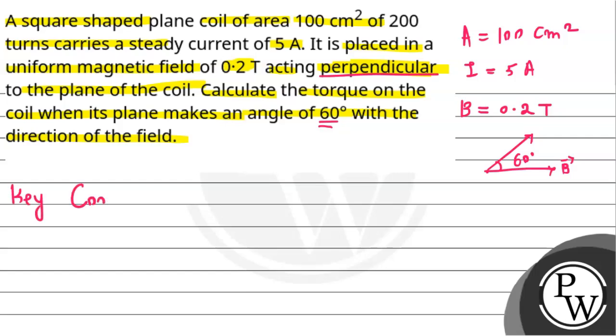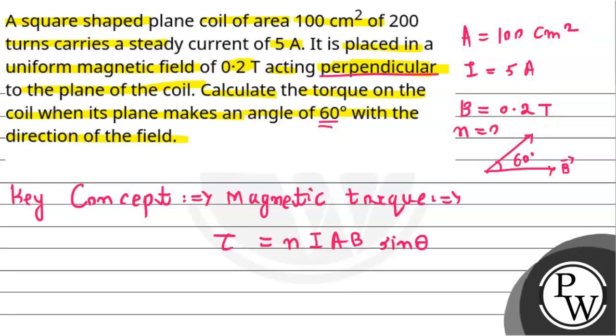So let's see the solution. But before that, let's talk about the key concept which we are going to use here for this question. So we will simply use magnetic torque concept. So magnetic torque can be given by the formula that is τ is equal to N into I into A into B sine of θ. Where N is number of turns, which is given as 200, I will be the current, A area, B magnetic field, and θ is the angle between the coil and the magnetic field or the direction of magnetic field.